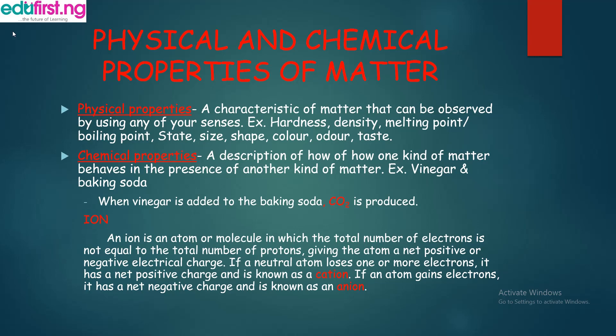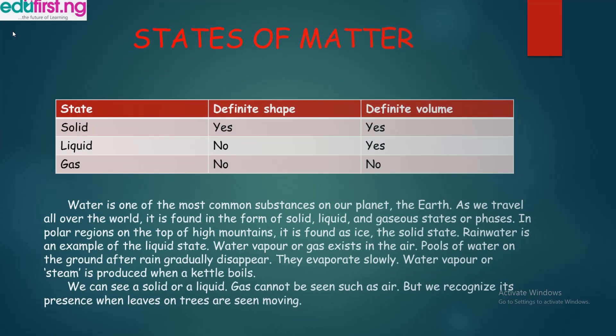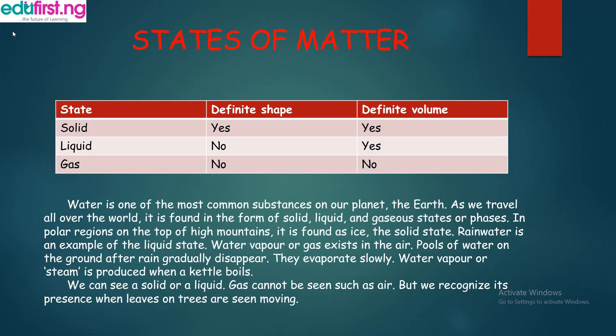Now let's look at state of matter. There are three states of matter. Water is one of the most common substances on our planet. As we travel all over the world, it is found in the form of solid, liquid, and gaseous phases. When we move to polar regions or the top of high mountains, we find ice, which is in solid state. Rainwater is an example of the liquid state, and water vapor or gas exists in the air.